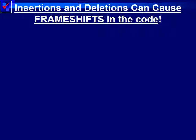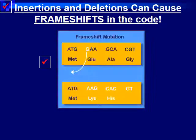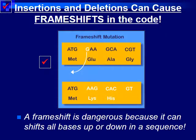Now, insertions and deletions are very dangerous because they can cause something called a frameshift. A frameshift affects every other base down the sequence. Think about the sentences: with substitution, it went from 'the dog ate the fat cat' to 'the dog ate the fat rat' — it still made sense. However, when we had the insertion and deletion, the sentences no longer made any sense at all. This is why frameshifts, insertions, and deletions are some of the most dangerous types of mutations — they don't just affect one point, they affect everything down the line.